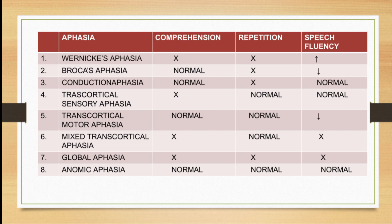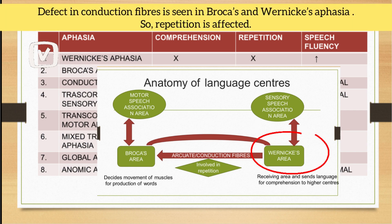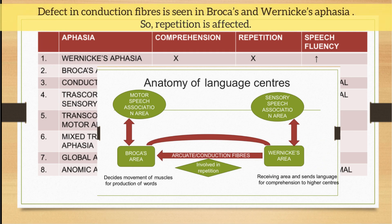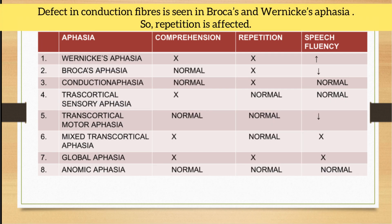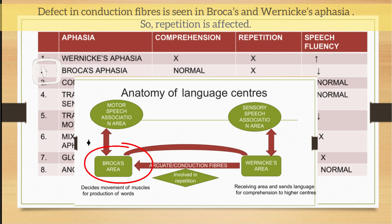For example, in Wernicke's aphasia, whenever there is damage to Wernicke's area, there is loss of comprehension, loss of repetition, but speech fluency is maintained and there may be jargon speech. Whereas when there is a lesion to Broca's area, comprehension remains normal, repetition is impaired, and speech fluency decreases.